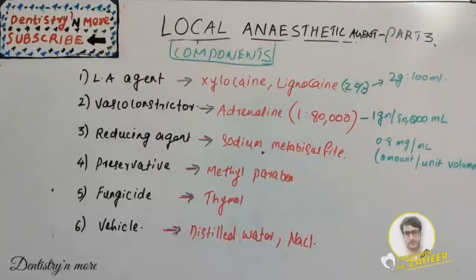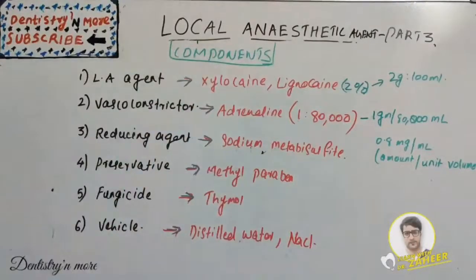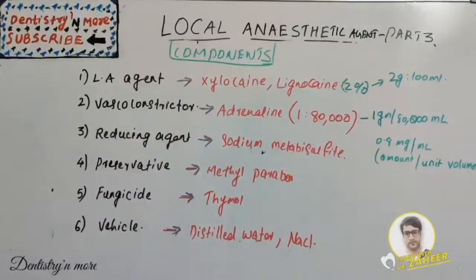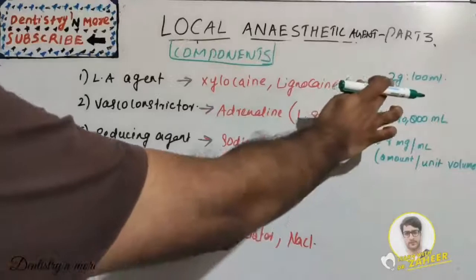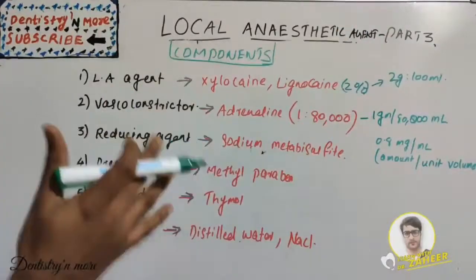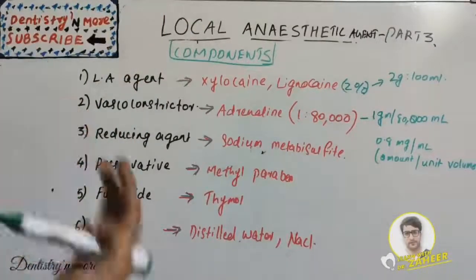The first component is the basic local anesthetic agent. The commonly used ones in dentistry are xylocaine and lignocaine. It is 2%, which is a dilution factor — that is 2 grams in 100 ml, a weight by volume measurement. This is the component which produces local anesthesia.